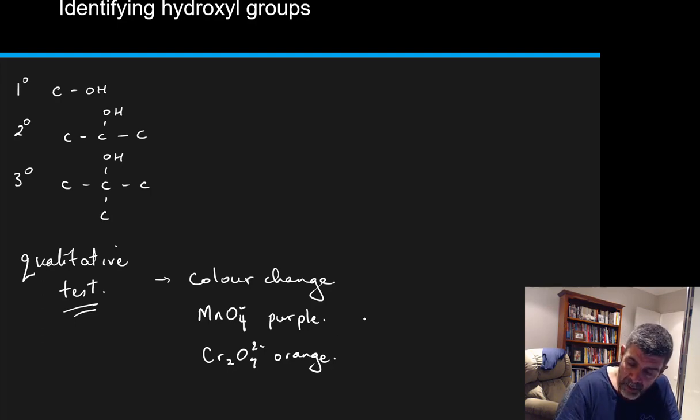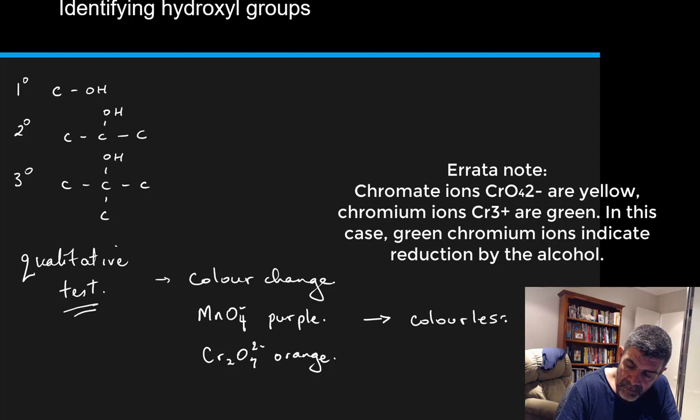The color changes we would expect to see for a positive result are colourless if we're using the permanganate ions from purple to colourless, and orange to green for the chromate ions when reducing the dichromate ion. Both of these are oxidizing agents that cause oxidation to occur in other species.